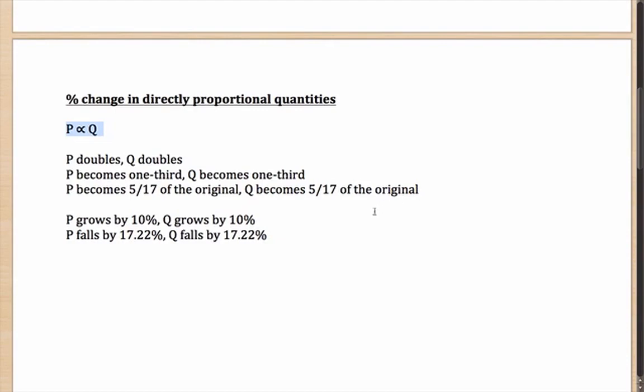Not a very difficult one to solve. In this case, if there is a percentage change, if P grows by 10%, Q will also grow by 10%. If P falls by 17.22%, Q falls by 17.22%. Whatever is the change in P, the same change will happen in Q. That is why they are directly proportional quantities.